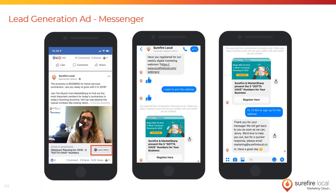Messenger ads are another option. The call to action for these ads always shows the Messenger icon, and options include 'Learn More,' 'Send Message,' or 'Contact Us,' so people know clicking it will open a conversation in Messenger. At this point you can set up a Facebook autoresponder that directs them to email or call you for a faster response. If you go this route, I'd recommend having someone regularly checking Facebook Messenger to follow up on these conversations in near real time.